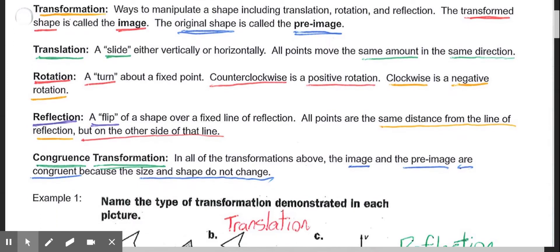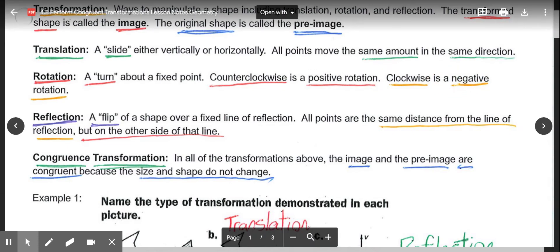Then we have a rotation, and a rotation you can think of as a turn or a spin around a fixed point. Think of the hands on a clock - the fixed point is where they all meet in the middle and rotate around. When an object is rotated counterclockwise, we call it a positive rotation. In a clockwise direction, it's a negative rotation.